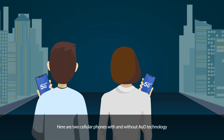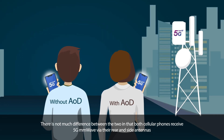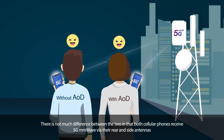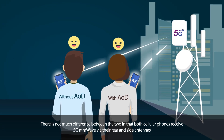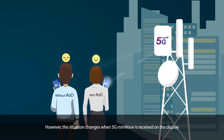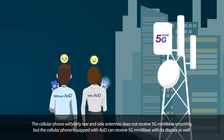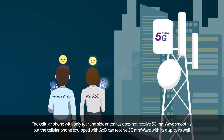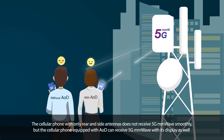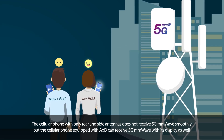Here are two cellular phones, with and without AOD technology. There is not much difference between the two in that both cellular phones receive 5G millimeter wave via their rear and side antennas. However, the situation changes when 5G millimeter wave is received on the display. The cellular phone with only rear and side antennas does not receive 5G millimeter wave smoothly, but the cellular phone equipped with AOD can receive 5G millimeter wave with its display as well.